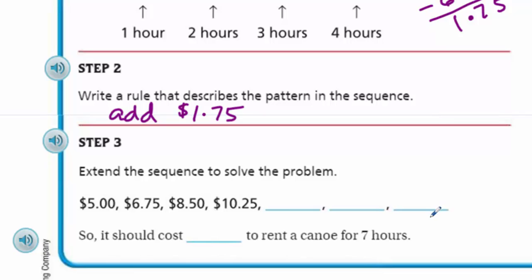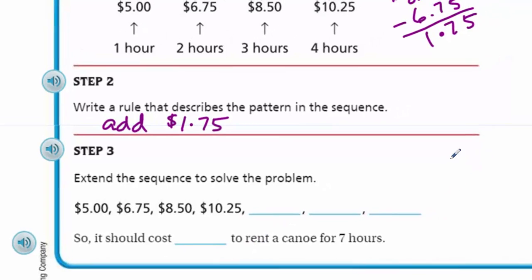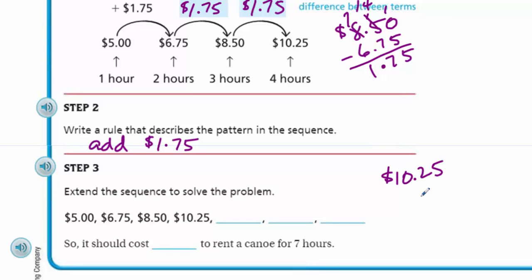Step three. Extend. Ooh. What does extend mean? It's like to kind of continue, go beyond, right? Extend the sequence to solve the problem. Okay. So now we have all the way up to $10.25. So we have to continue on. Well, now that we know the rule, we can just add $1.75 on each term. $1.75. Okay. We're adding that. Bring it on down. Yeah. That's right. You have to bring down that decimal point. Now we have 10. Now we have 9. We have 10 again. Oh. Got to bring up another one. Does that seem reasonable? Let me see. 75 cents out of there. Yes. That does seem reasonable.